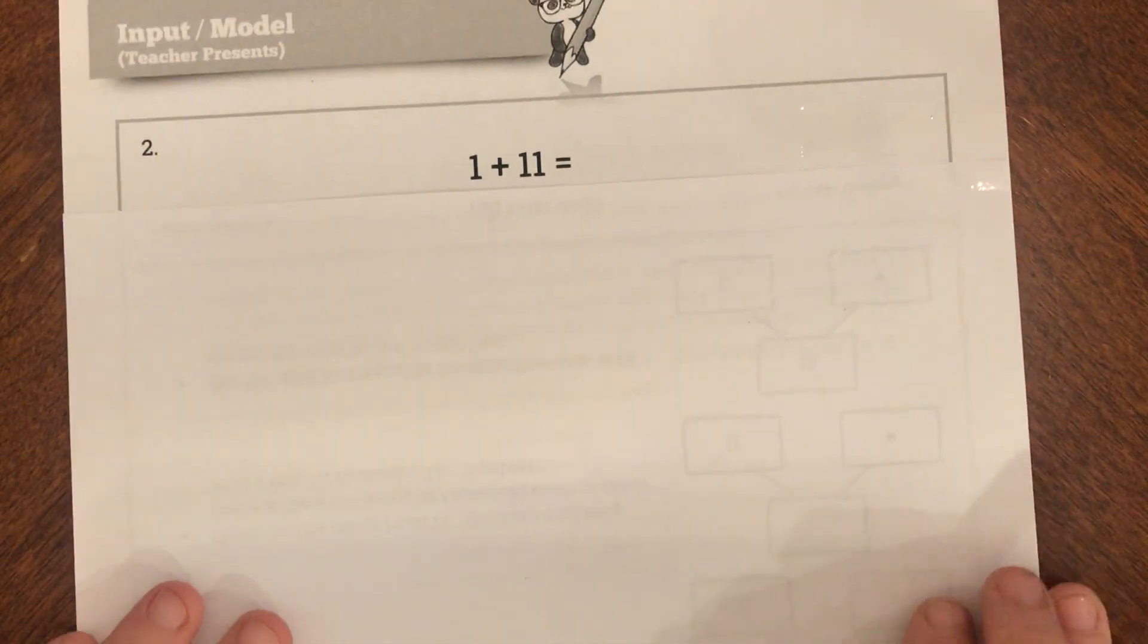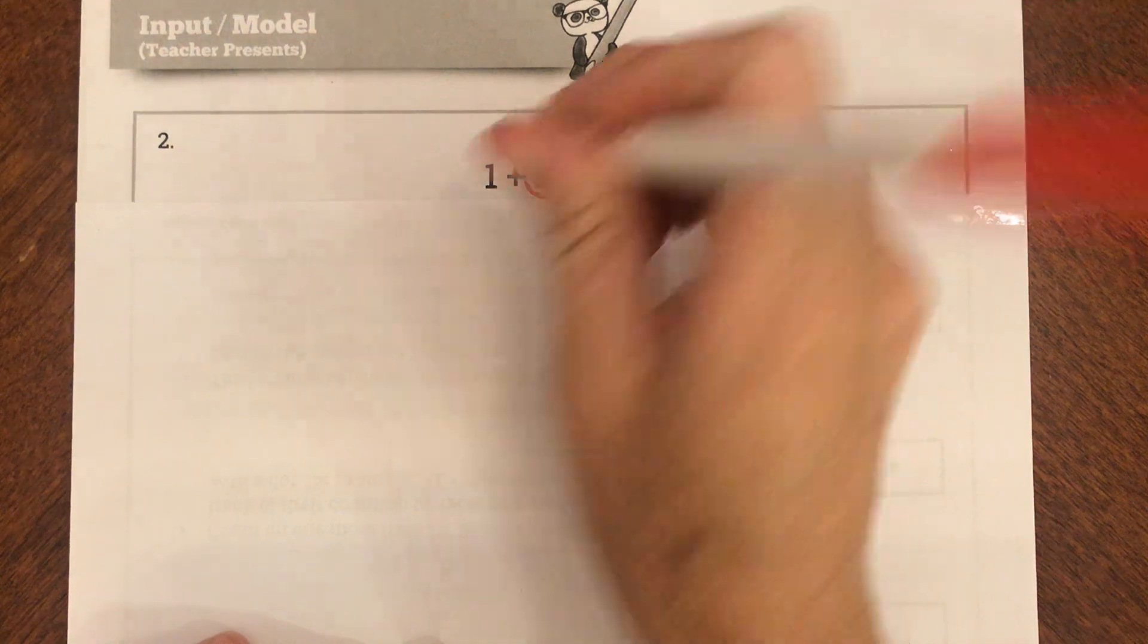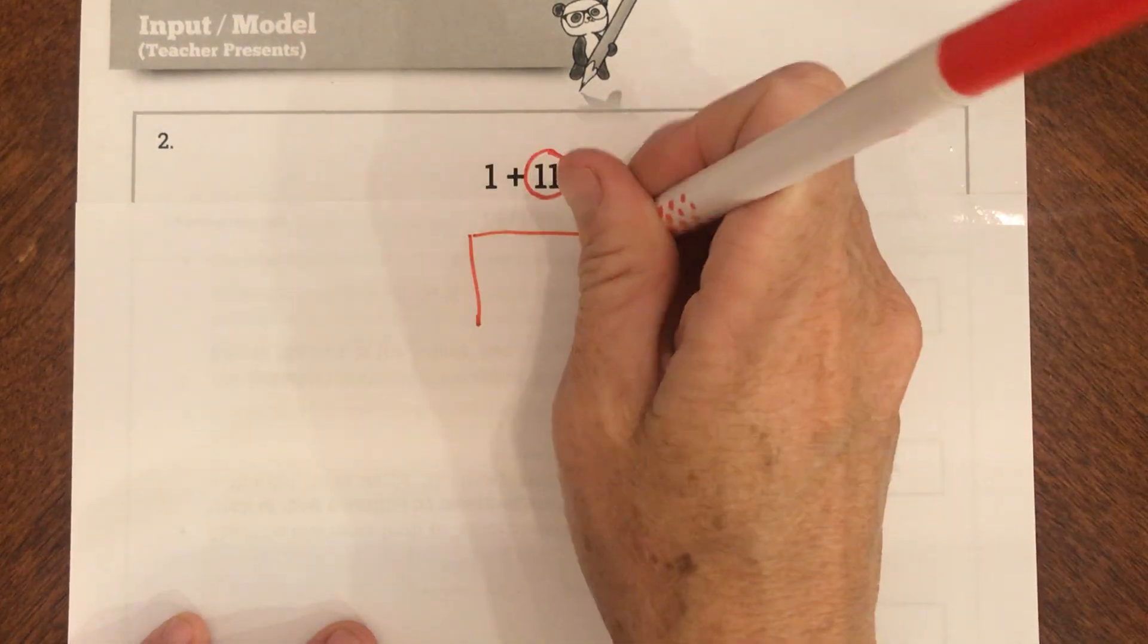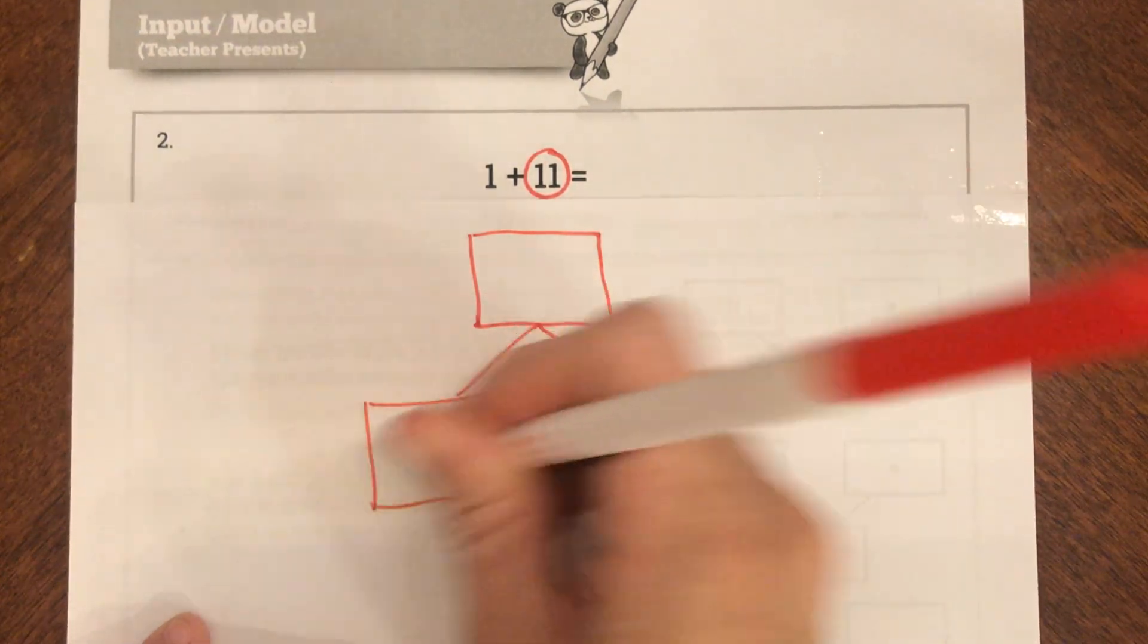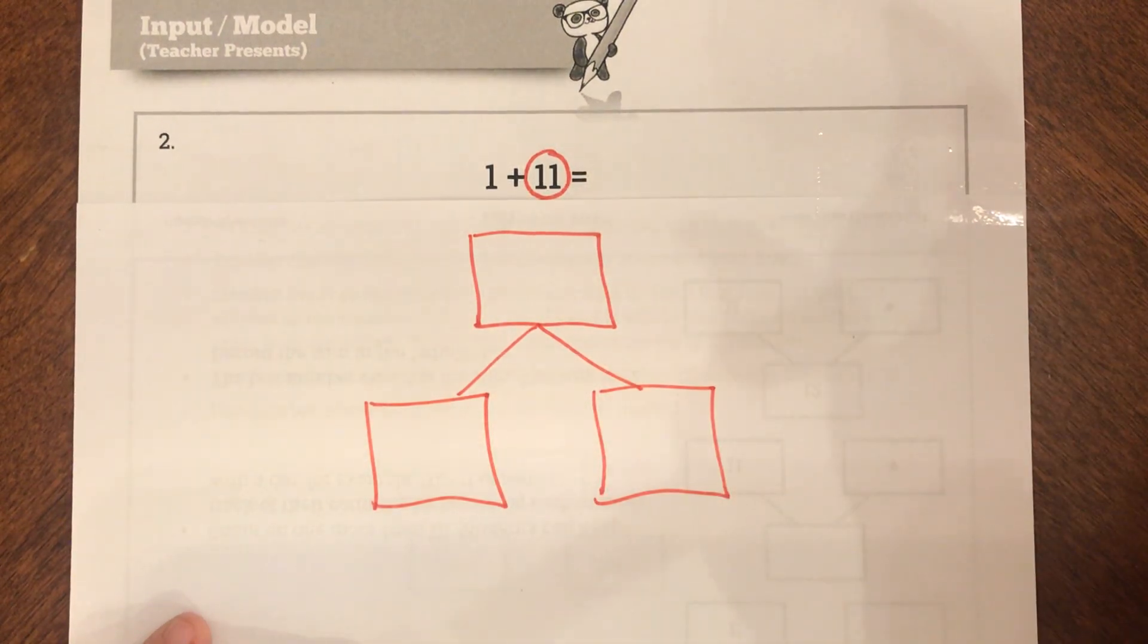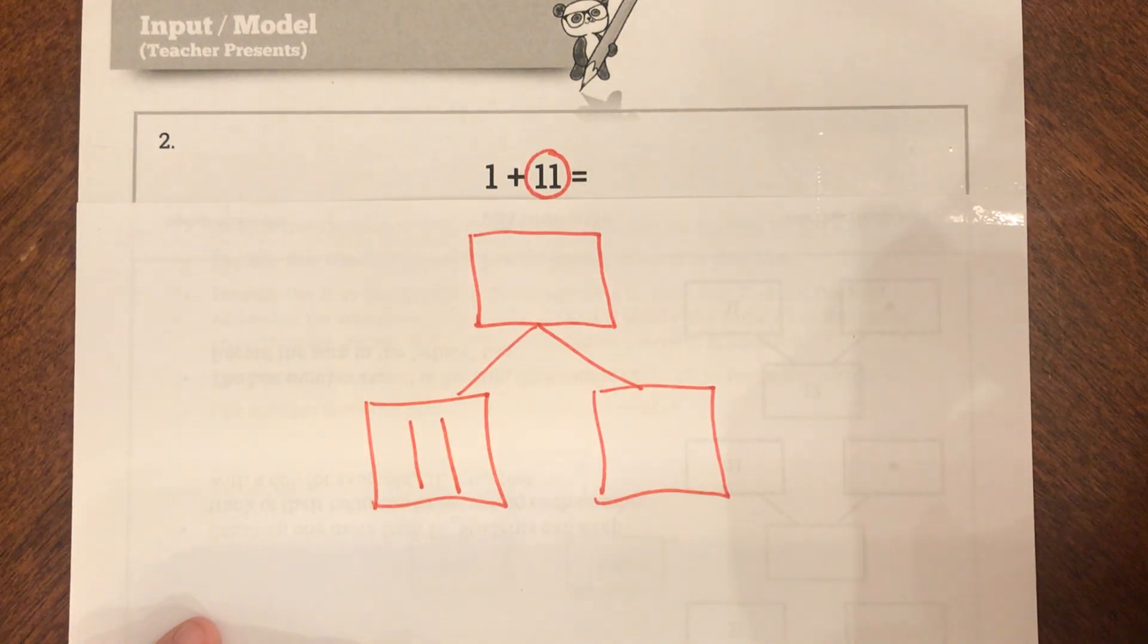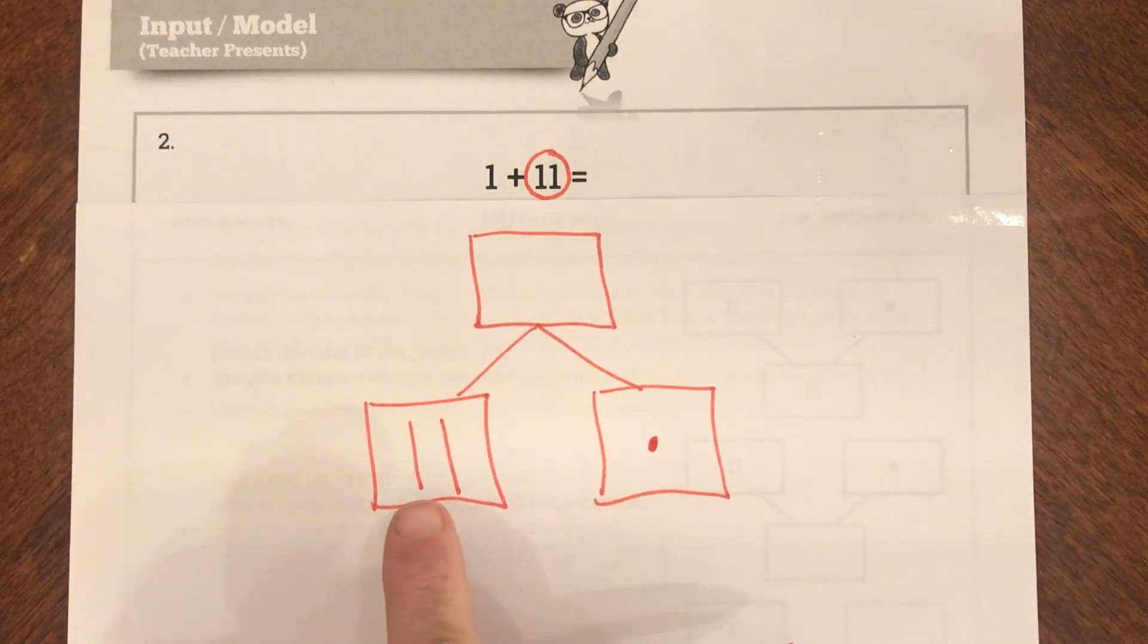I'm going to show you another one of these. So here's my next one. And I'm going to start by circling my greater addend. So my greatest one is 11. My two addends are 1 and 11. So I'm going to show you the number bond for this. So remember the sum goes here. I don't know what my sum or my answer is yet.